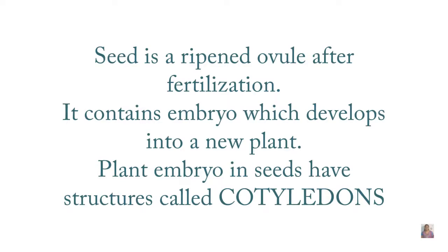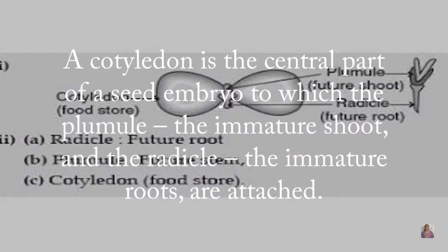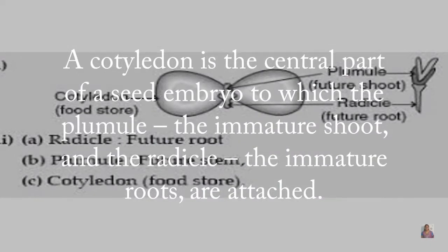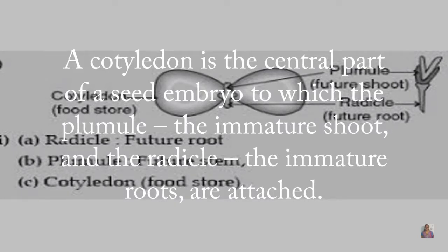A cotyledon is the central part of the seed embryo, to which two structures are attached: the plumule and the radicle. The plumule will develop into a future shoot system, and the radicle will develop into a future root system.